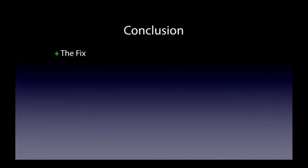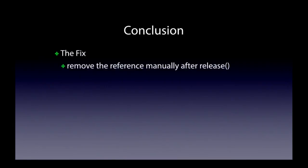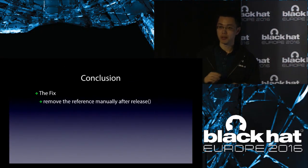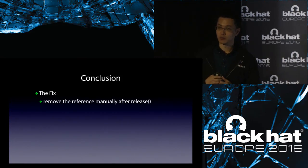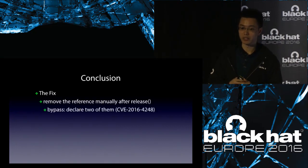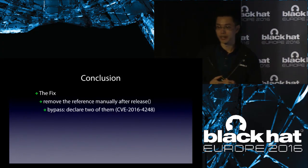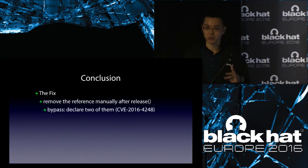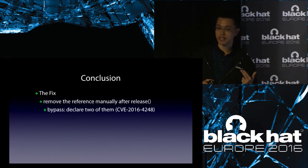For the conclusion — first, about the fix. After reporting this issue to Adobe, their fix was to manually remove the reference pointer from the ActionScript level that was used to invoke release. But this fix can be bypassed — so there goes another vulnerability, CVE-2016-4048. I bypassed the first fix by declaring two references pointing to PSDK: invoking release with one of them, but triggering the use-after-free with the other.